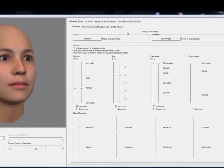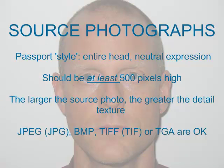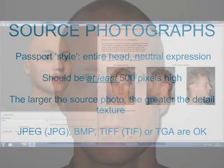The first thing many people want to do with FaceGen Modeler is to input a photograph of a face. To begin, select the PhotoFit tab on the far right. You'll save yourself a whole lot of trouble if you start with a good source photograph. Stick to a passport style, full face, looking straight ahead, showing a neutral facial expression. Please note that FaceGen's source photos should be at least 500 pixels high, that the larger the source photo the more detail you'll get, and JPEG, TIFF, BMP, and TGA file formats are all okay as FaceGen's source photos.